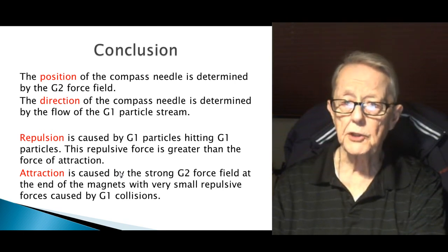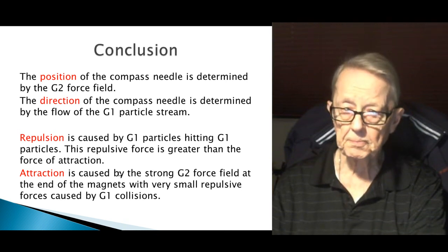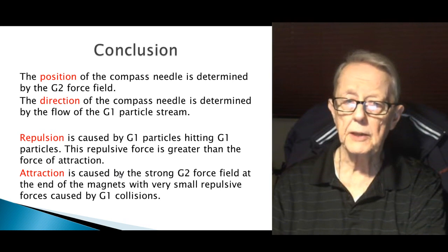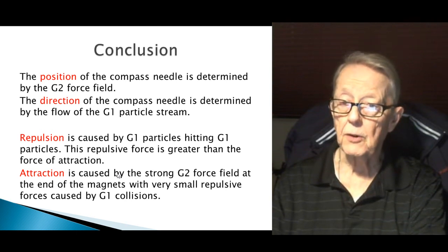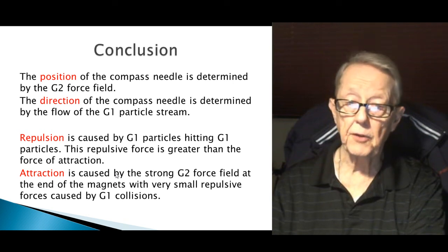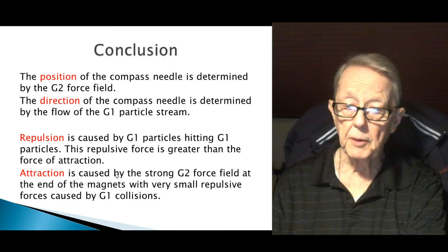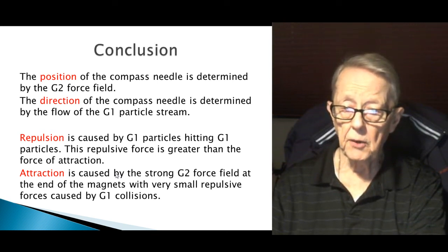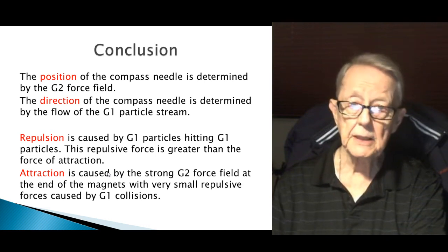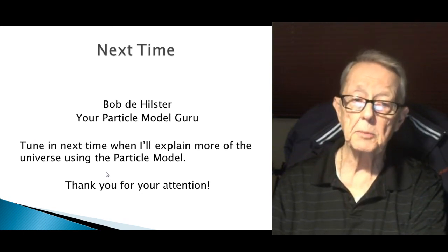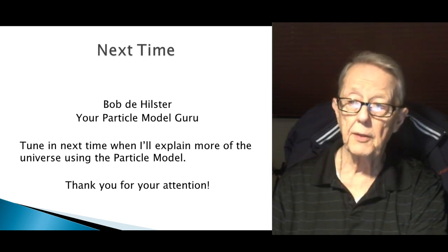Here's the conclusion. The position of the compass needle is determined by the G2 force field. The direction of the compass needle is determined by the flow of the G1 particle stream — it will flip if it's in the wrong direction. Repulsion is caused by G1 particles hitting G1 particles, and this repulsive force is greater than the attractive force, which is still present. Attraction, when north faces south, is caused by the strong G2 force field at the ends of the magnets, with only small repulsive forces from G1 collisions. My name is Bob DeHilster — I am your Particle Model Guru. Tune in next time when I'll explain more of the universe using the particle model. Thank you for your attention.